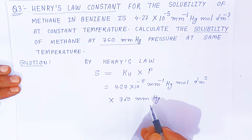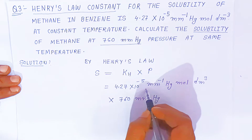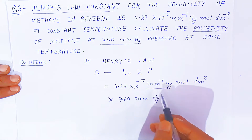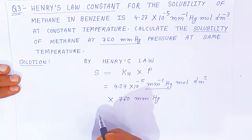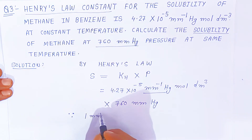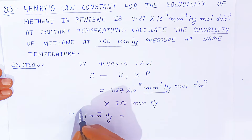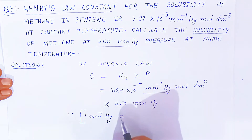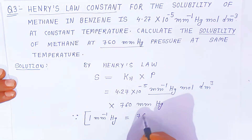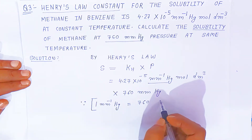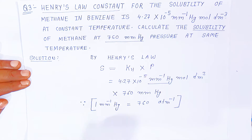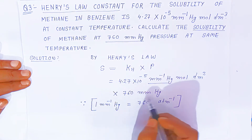Students, if you want to convert mm mercury into atmosphere, you have to multiply with 760. Since mm mercury is in the denominator of the units, before multiplication you have to convert into the same unit. 1 per mm mercury is equal to 760 per atmosphere.